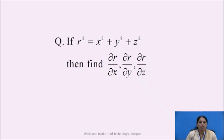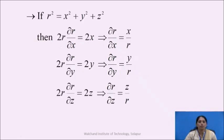The question is: if r² = x² + y² + z², then find ∂r/∂x, ∂r/∂y, and ∂r/∂z. I hope you all have solved the example. Let us check the solution.